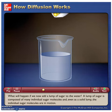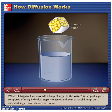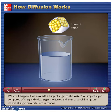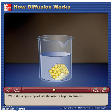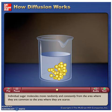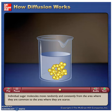What will happen if we now add a lump of sugar to the water? A lump of sugar is composed of many individual sugar molecules, and even as a solid lump the individual sugar molecules are in motion. When the lump is dropped into the water, it begins to dissolve.